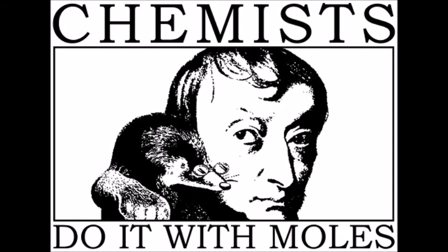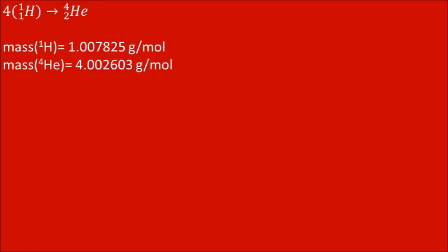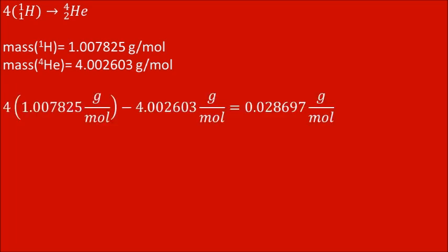A mole is a common unit in chemistry which relates mass to number of atoms. Hydrogen-1 has a mass of 1.007825 grams per mole, and helium-4 has a mass of 4.002603 grams per mole. So if we fuse four moles of hydrogen into one mole of helium, we find that almost three hundredths of a gram has just disappeared.